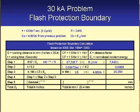For step three, we take the normalized incident energy from the previous problem — 4.8206 — multiply that by the calculation factor of 1.5, then multiply by 4.184. Step three gives us 30.254.